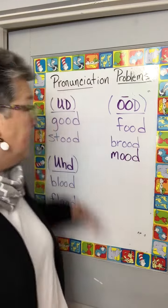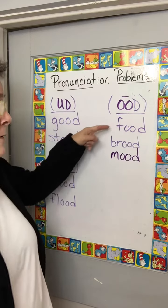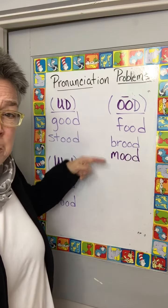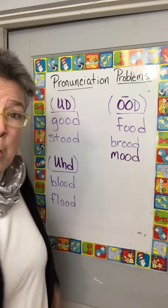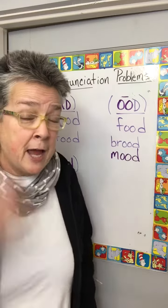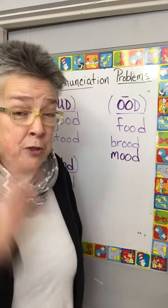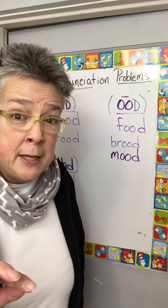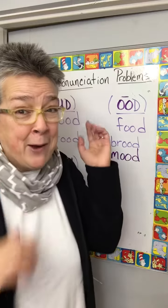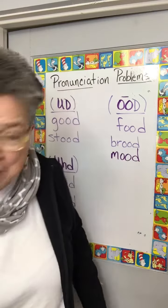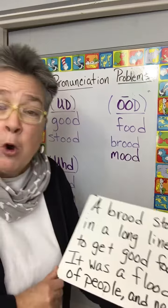Let's review real quick: good, stood, food, brood, mood, blood, flood. Why does English have three different pronunciations for the three-letter combination O-O-D? I don't know, but now you can read and pronounce these sentences.